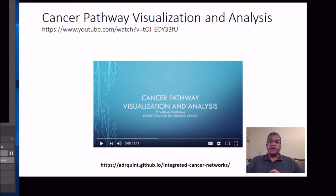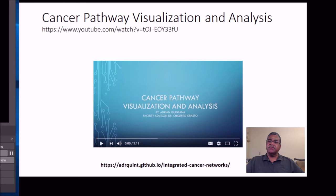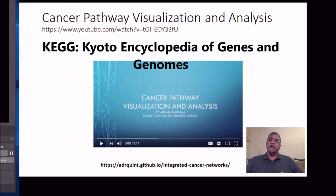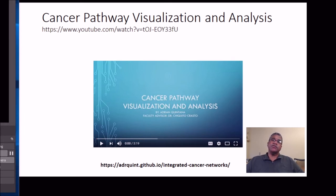The next project was by Adrian Quintana, who now works in industry. His project involves cancer pathway visualization and analysis. There is a resource called KEGG — the Kyoto Encyclopedia of Genes and Genomes — which contains biological pathways. You can input gene information, see which pathways a gene belongs to, click on a pathway for a visual representation, and click individual genes to learn more about them or their gene products.